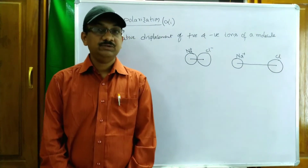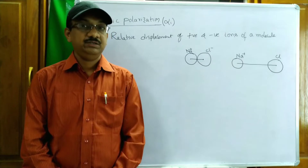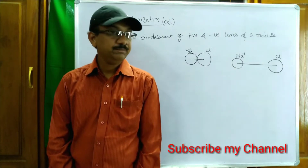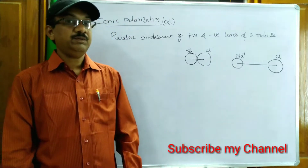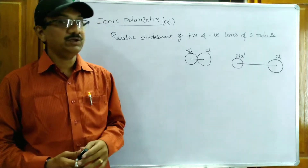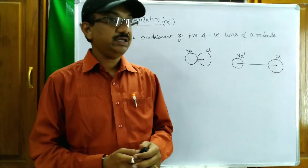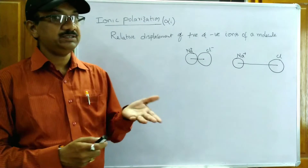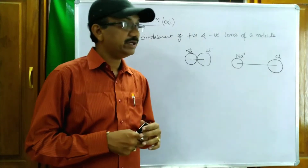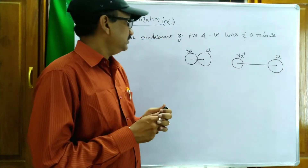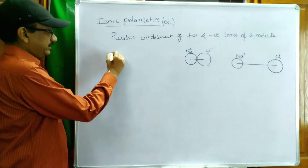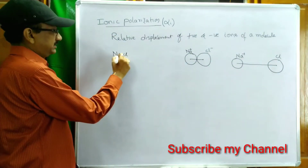Today I am going to discuss ionic polarization. This topic belongs to the dielectric properties chapter. I have already uploaded certain videos from this chapter. Ionic polarization, in a single line, means the relative displacement of positive and negative ions of a molecule. Let us consider a molecule NaCl.